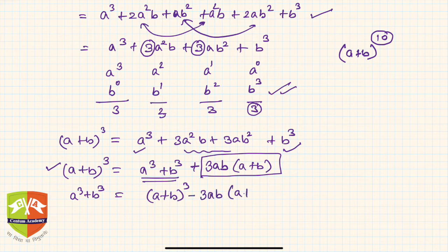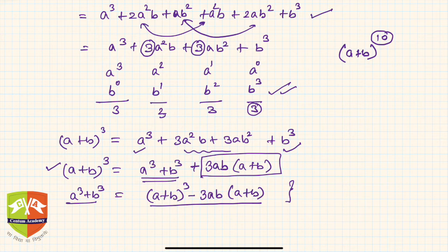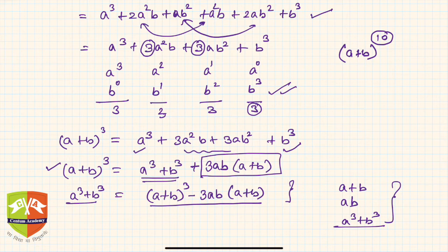Taking that factor to the other side: a³ + b³ = (a + b)³ − 3ab(a + b). This form is useful when you are given the value of (a + b) and the value of ab and are asked to find a³ + b³. Please keep this beautiful identity in mind.